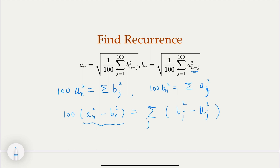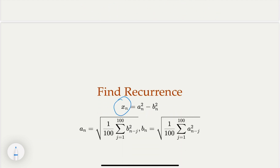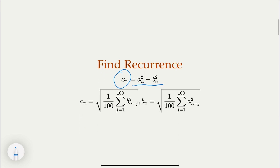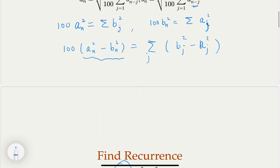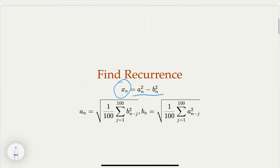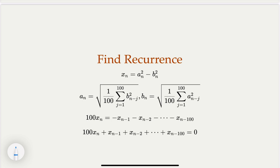So we consider a new sequence x_n, where x_n = a_n² - b_n². We know that x_n satisfies a recurrence, as we noticed: it is related to the previous 100 terms. Let's write out this recurrence relationship and review techniques for solving or examining linear recurrence relations.